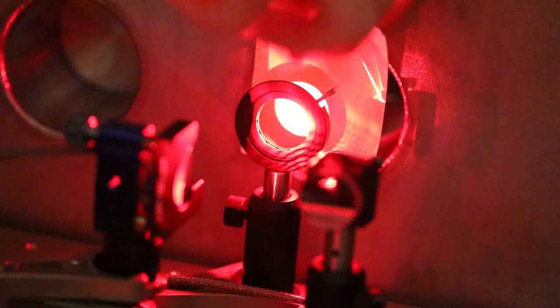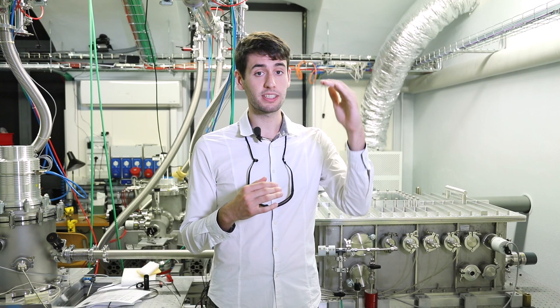Therefore, the radiation emitted by each single atom can efficiently sum up, only if the polarization induced by the driving laser propagates in phase with the harmonic radiation. Such condition is fulfilled when the momentum conservation for the up-conversion process is satisfied.